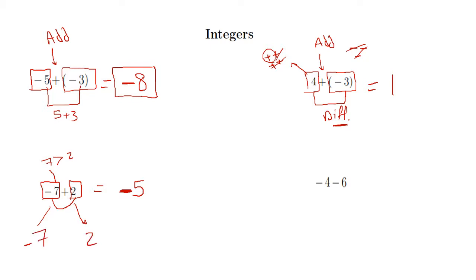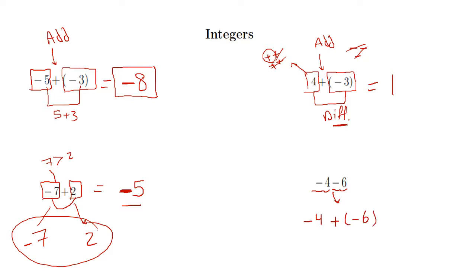Finally, if I have negative 4 and negative 6 — this is the same as negative 4 plus negative 6. I am adding two negative numbers, so both signs are negative. Adding 4 and 6 gives 10, so the answer is negative 10.